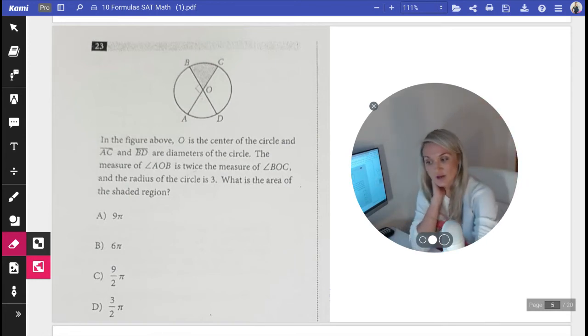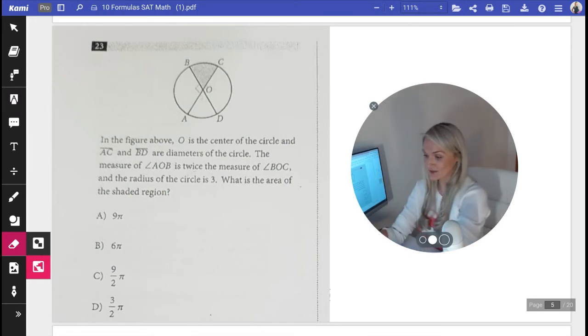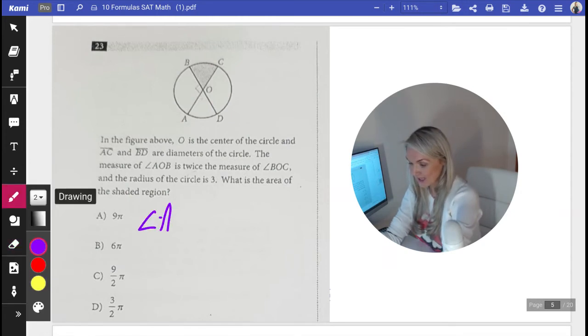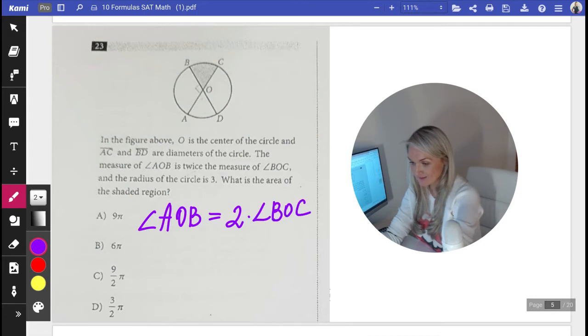So here measure of AOB is twice the measure of BOC. Which one's greater? AOB is greater. So we're going to write that one first. Angle AOB equals twice times BOC. And then for our own simplicity, we're just going to say this one is going to be A. So this angle is A. This angle is going to be 2A.